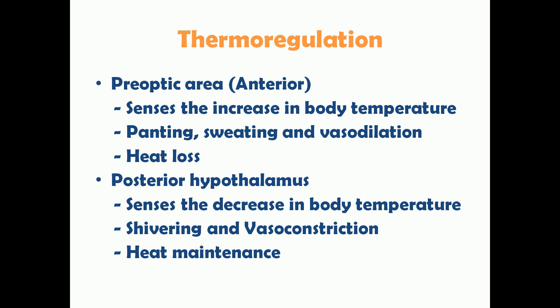The posterior hypothalamus senses a decrease in body temperature. When body temperature falls, the posterior hypothalamus causes shivering and vasoconstriction, which help to conserve heat inside the body. For example, when you get a fever you experience shivering — that shivering increases heat in the body, raising body temperature with the help of the posterior hypothalamus.